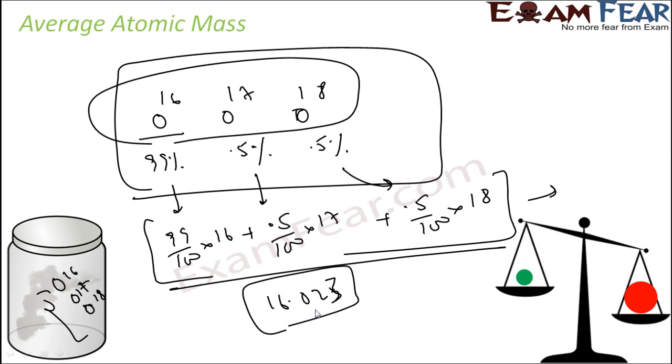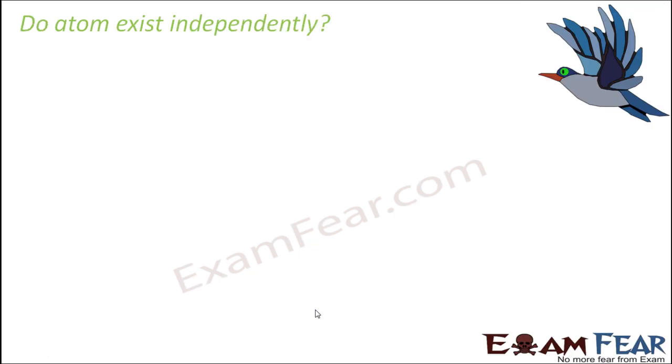It is the average of atomic mass of all isotopes available in nature based on the percentage of their availability. Now the question is: we talked about atoms, their size, their weight. Can atoms exist independently like a bird or anything which exists independently?